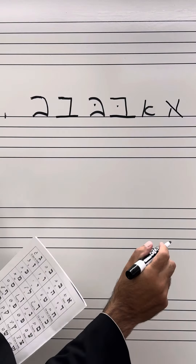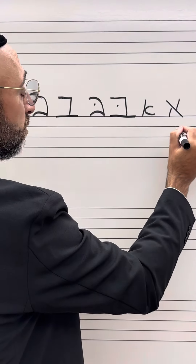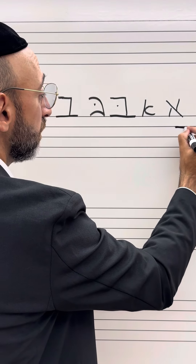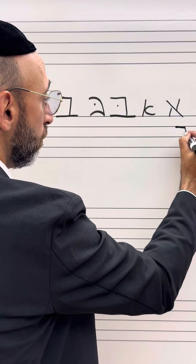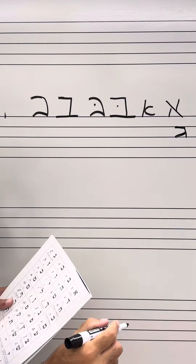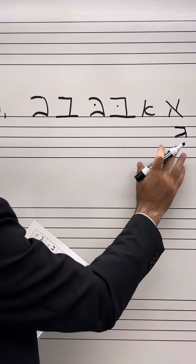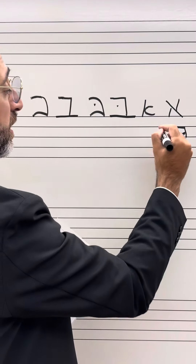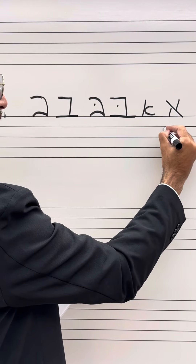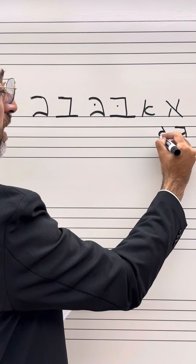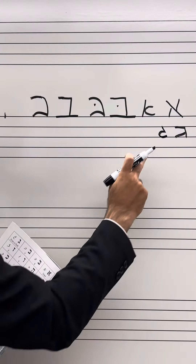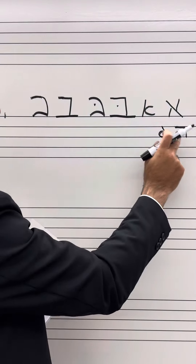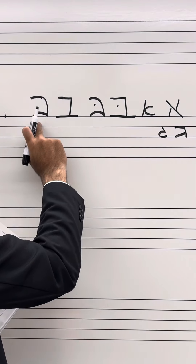The next letter is the Gimel. The Gimel appears like this in the Torah. However, in script it looks completely different — it's going to appear as a line that comes over like that. That is the Gimel. So we have Aleph, Bet, Vet, and Gimel.